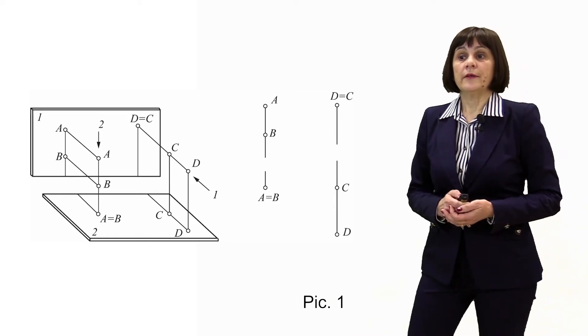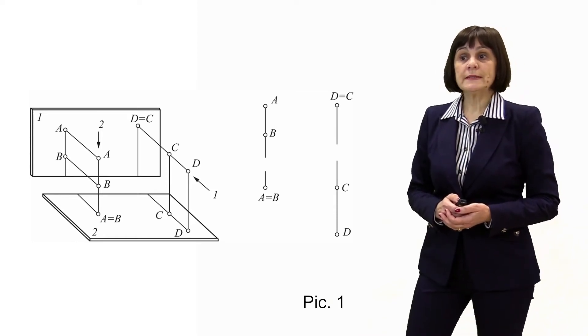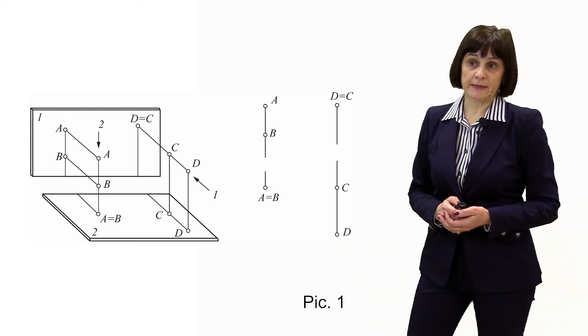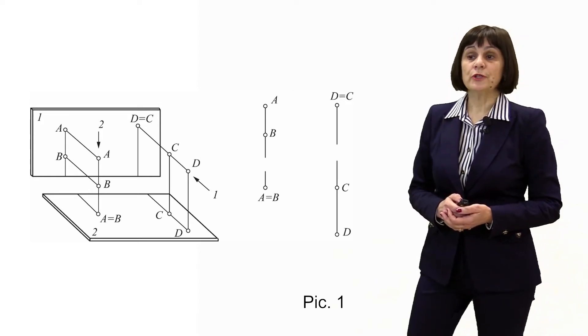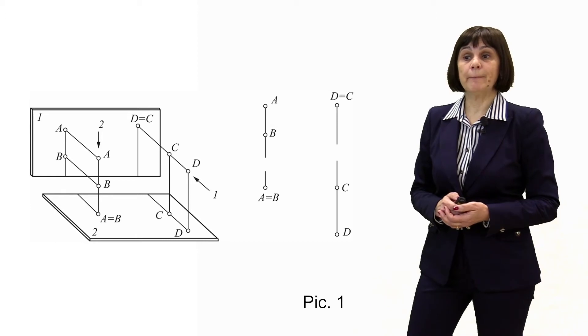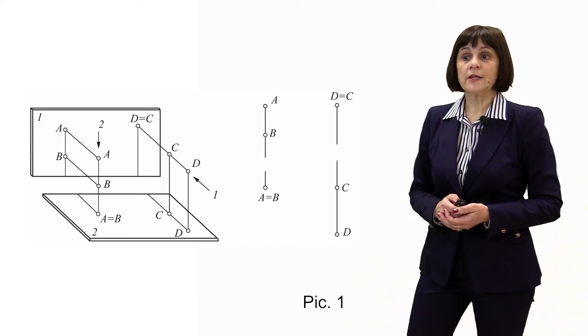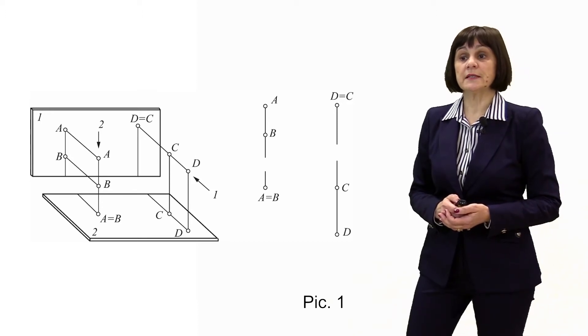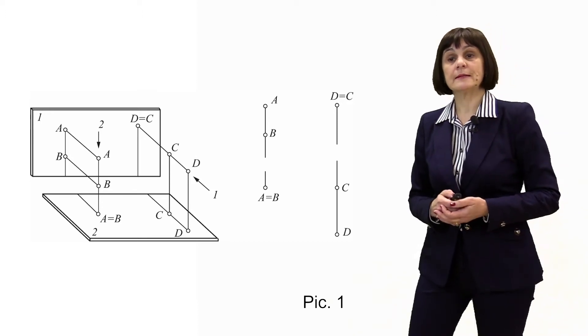There are rules of visibility of points located in space. Of the two horizontally competing points on the horizontal projection, the point that is located above is selected.